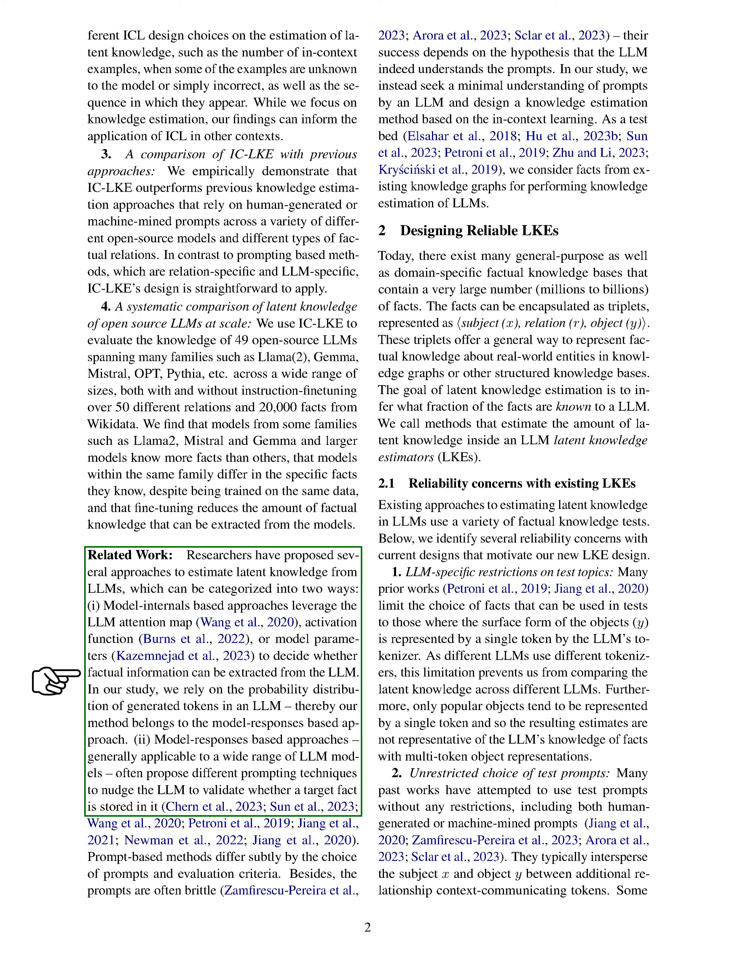We have reviewed previous research on estimating latent knowledge from large language models. Researchers have proposed two main approaches: model internals-based and model responses-based. Model internals-based approaches use the LLM's internal mechanisms like attention maps and activation functions to extract factual information. Model responses-based approaches analyze the probability distribution of generated tokens in an LLM to estimate knowledge.